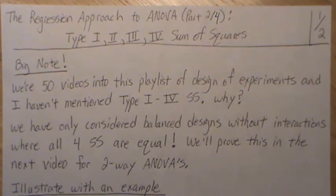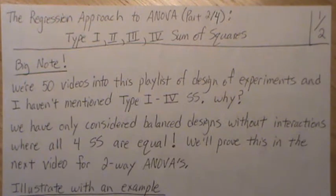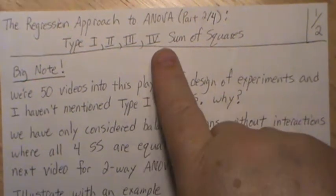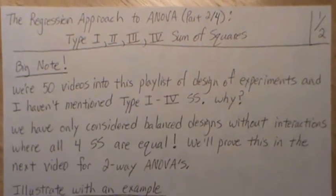We're going to look at type 1, type 2, type 3, and type 4 sums of squares, and try to explain what each of those mean. Well, maybe not type 4 sums of squares.